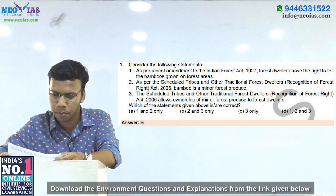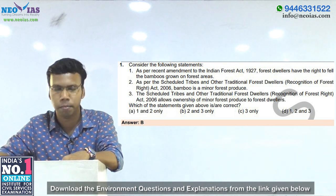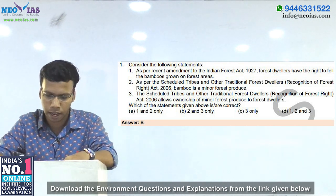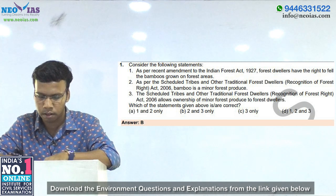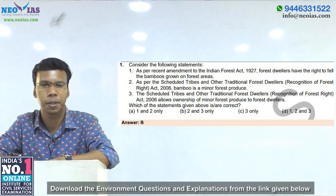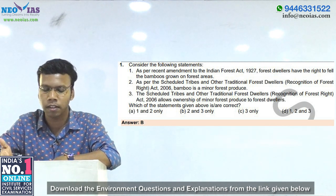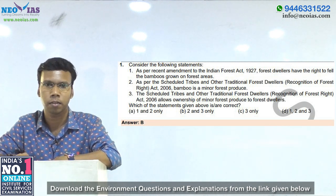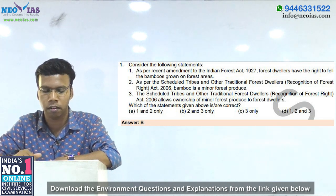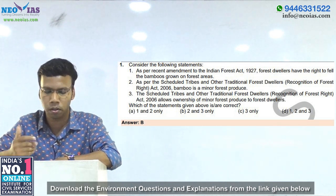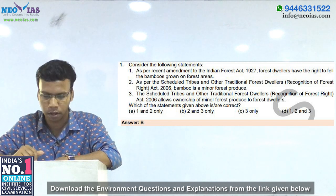Since the first statement is wrong, we can eliminate options A and D. So we eliminate A and D, leaving B and C. By that, we come to know that the third statement is correct, because both B and C contain statement 3. So we only need to evaluate the second statement.